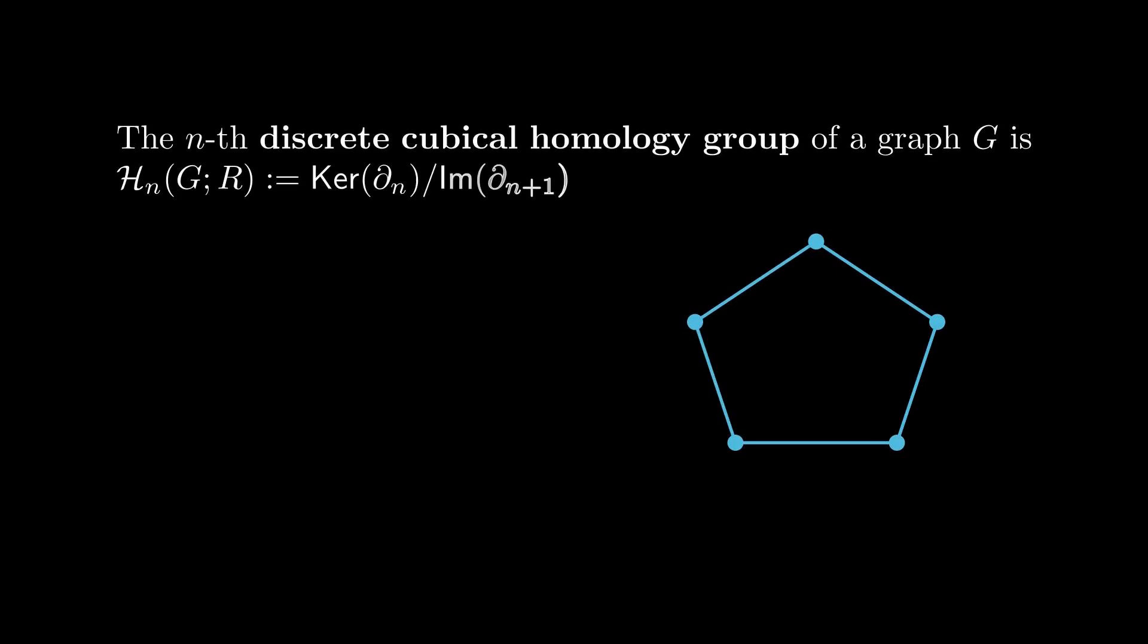We can now compute some actual examples of this. So for C5, the 0 and first homology groups are just the ring itself, and any higher homology groups are trivial. So C5 is kind of one graphical model of a circle.